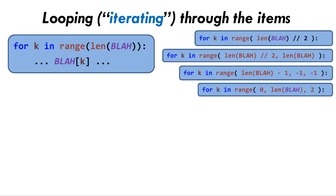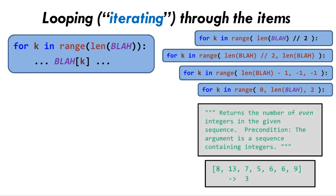One more variation that can be combined with any of the above variations. Often we want to examine various items in the sequence, but to process only items that meet a certain condition. Here's an example. Suppose that we want to implement a function that counts and returns the number of even integers in a sequence of integers. For example, if the sequence were as shown, our function should return 3, since the sequence shown has three even integers, namely 8, 6, and 6.